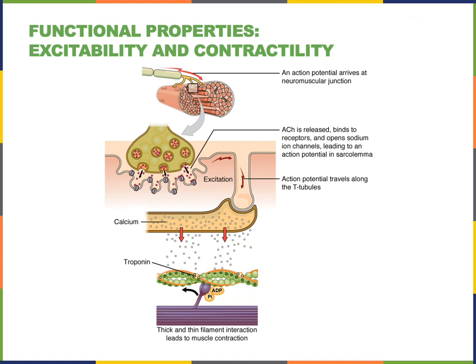Excitability and contractility are functional properties of muscle tissue. Excitability refers to the fact that muscles respond to stimulation. In the case of skeletal muscles, the stimulus comes from a motor neuron releasing neurotransmitters, and these neurotransmitters bind to receptors on the surface of the skeletal muscle cells. This excitation then stimulates contraction. Contractility is the functional property referring to how muscles shorten when they are stimulated.